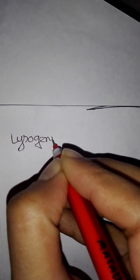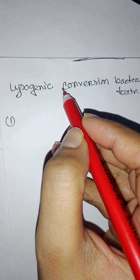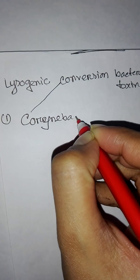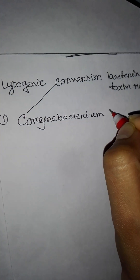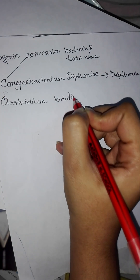Lysogenic conversion occurs in bacteria. The first example is Corynebacterium diphtheriae, which produces the diphtheria toxin. The second is Clostridium botulinum, which produces the botulinum toxin.